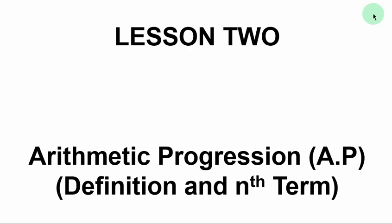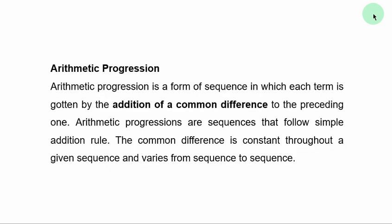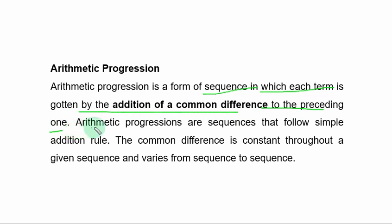Lesson 2: Arithmetic Progression — AP Definition and Nth Term. An Arithmetic Progression is a form of sequence in which each term is obtained by the addition of a common difference to the preceding one. Arithmetic progressions are sequences that follow a simple addition rule.